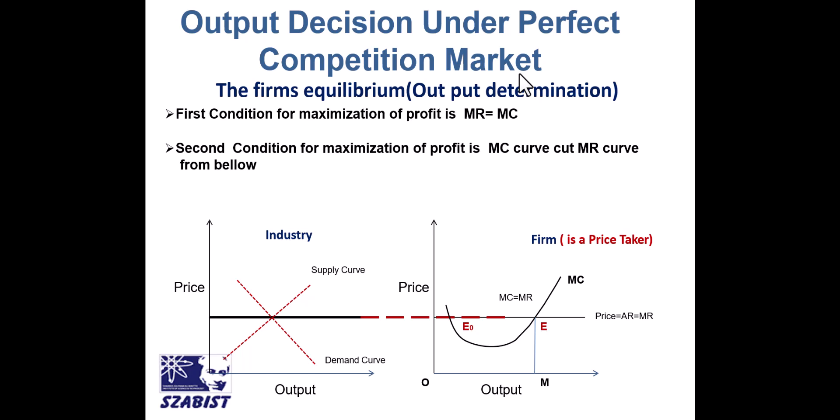For deciding the output decision under perfect competition there are two conditions. The first condition is that the firm will maximize their profit where marginal revenue is equal to marginal cost. That is the first condition for deciding the output level where profit is maximum.